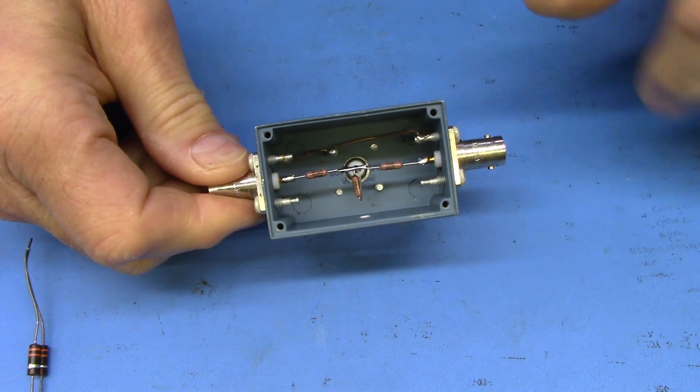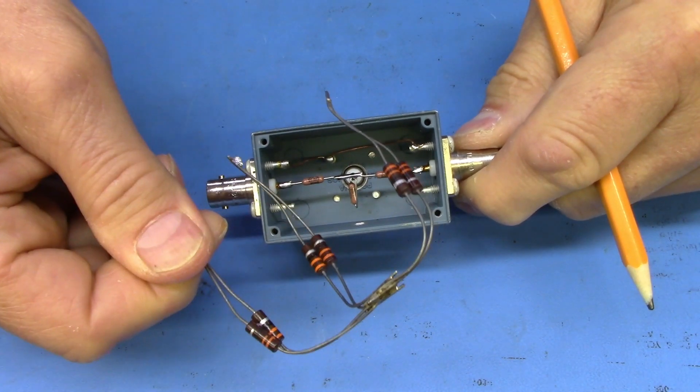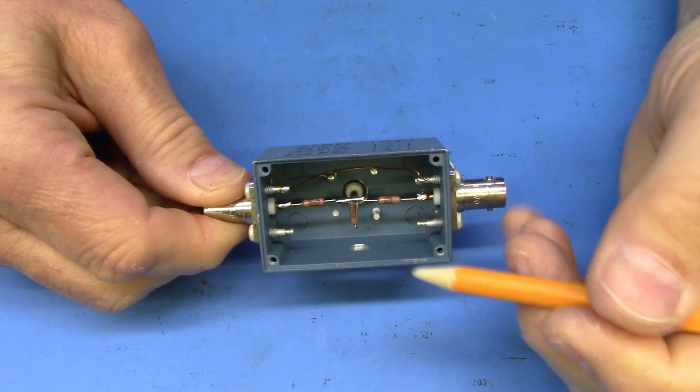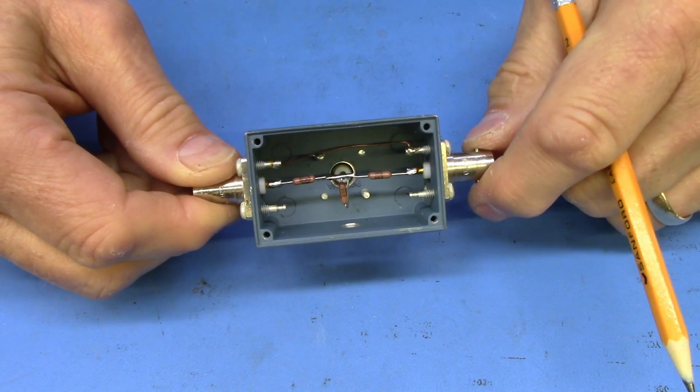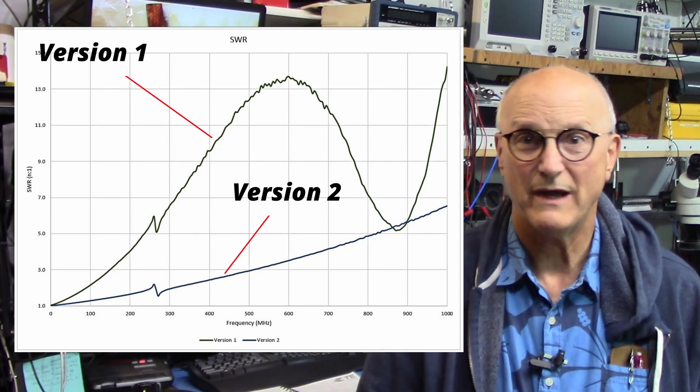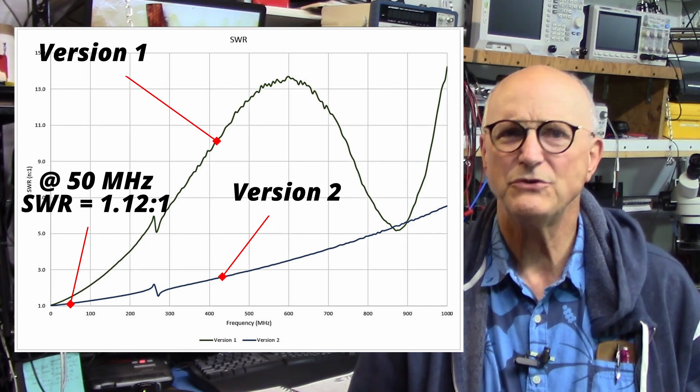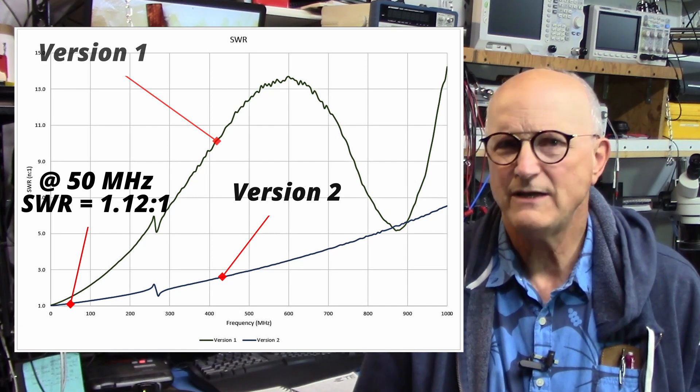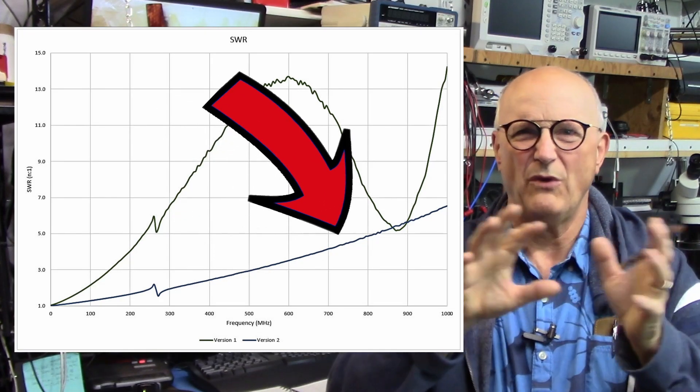So, I bought some 16.7 ohm 1% resistors and replaced the original ugly resistors with them. I put them in the same enclosure, but cutting the leads as short as I possibly could and still making connections inside the enclosure. Looking at the results, it's certainly way better than my mega-ugly version. At 50 megahertz, the SWR is 1.12 to 1 as compared to version 1, which had an SWR of 1.48 to 1.